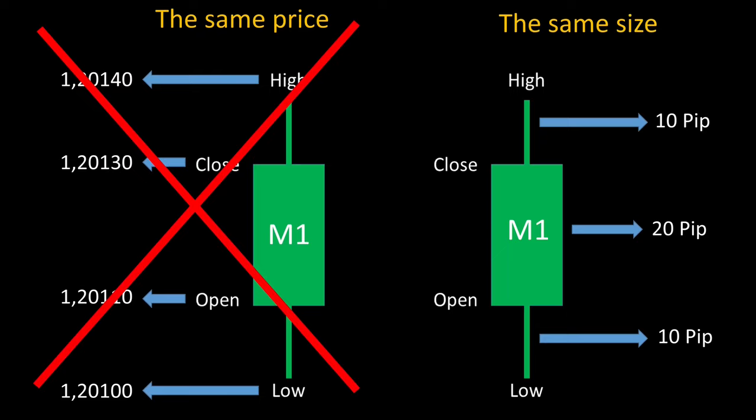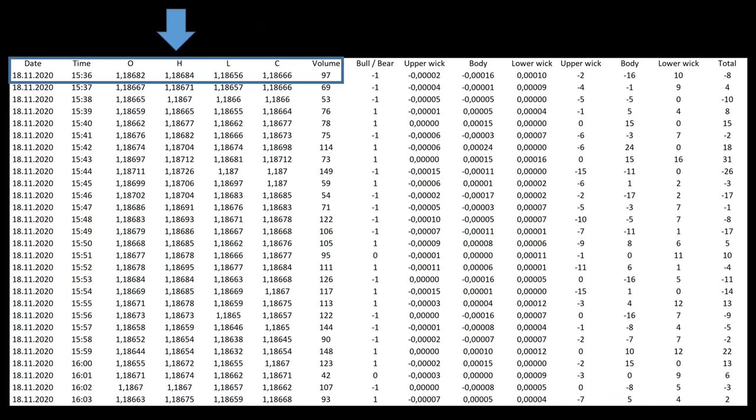We got stuck with the same price, so we're referring to the same size now. The probability should be significantly higher to find candles that are the same size within this period. We take the same data again and add another column to differentiate between bullish, bearish and doji candles. The upper wick always receives a minus value, the candle body a minus, plus or neutral value, and the lower wick is always worth a plus.